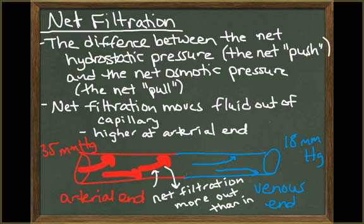There is more of a net push to move fluid out of the capillary than there is a net pull to move fluid into the capillary. The difference between the net push and the net pull is called the net filtration pressure. The net filtration pressure is the difference between the net hydrostatic pressure and the net osmotic pressure. At the arterial end, the net filtration pressure will be much higher than at the venous end.